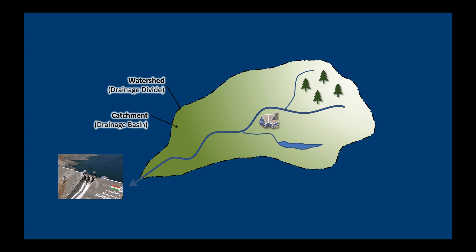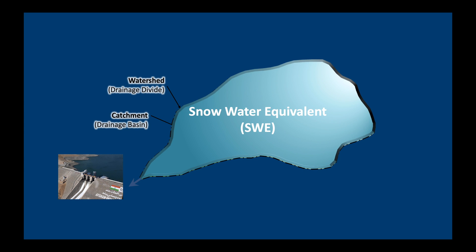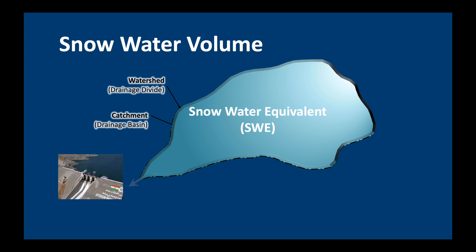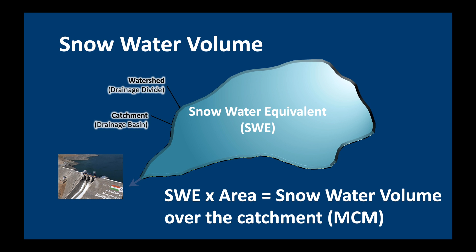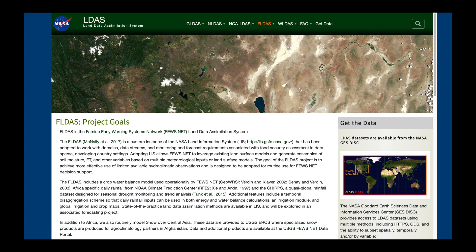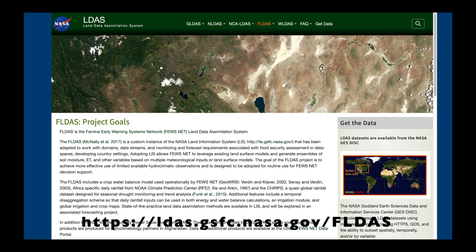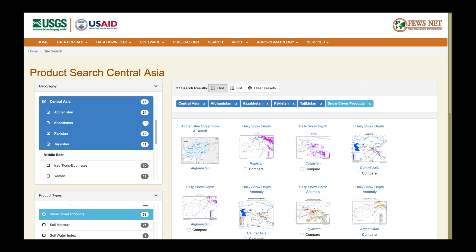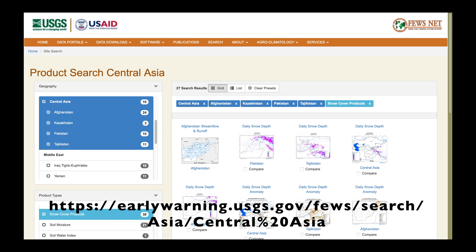If we take a catchment — say upstream of Malford Dam — and we know the snow water equivalent over the catchment, we can calculate the snow water volume by multiplying the average snow water equivalent by its area. The snow water volume is expressed in MCM, which stands for million cubic meters. Calculating SWE requires many different remote sensing inputs and hydrological models that need to be calibrated with ground data. For Central Asia, I recommend the SWE data provided by the FLDAS project, accessible at the USGS Fusenet data portal — I'll leave a link in the description below.